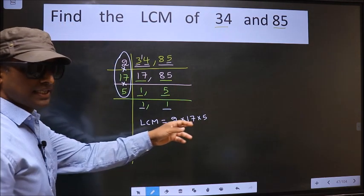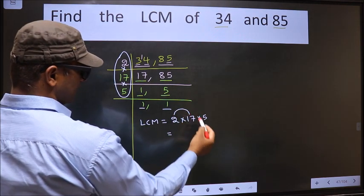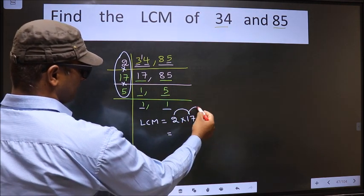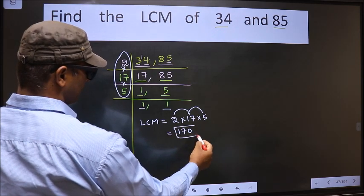Let us multiply these numbers now. So 2 into 17 is 34, 34 into 5 is 170. 170 is our LCM.